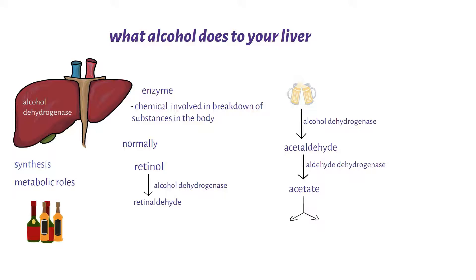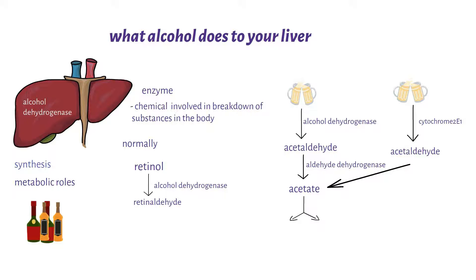Another pathway for alcohol metabolism involves the microsomal enzyme systems, where alcohol is broken down by cytochrome 2E1 to form acetaldehyde. This acetaldehyde is then converted to acetate, which enters other metabolic cycles in the body.